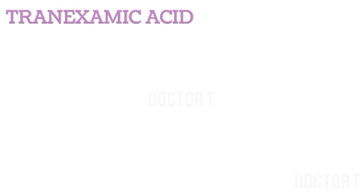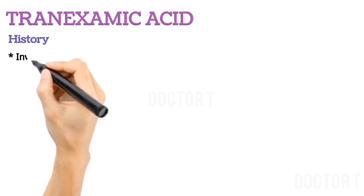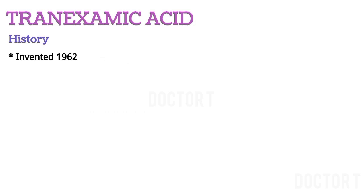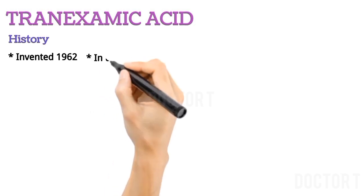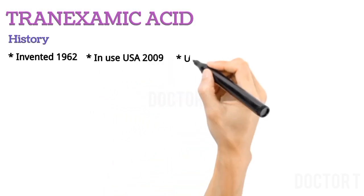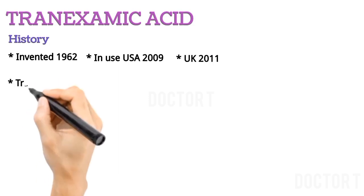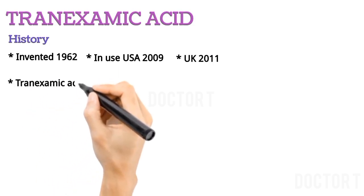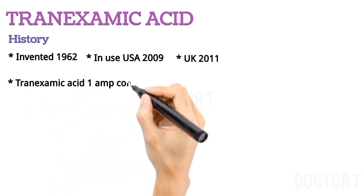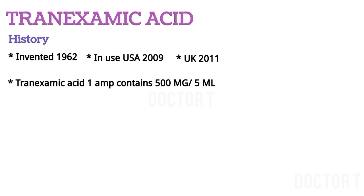Tranexamic Acid History: It was invented in 1962, came into use in the USA in 2009, and in the UK in 2011. One ampoule contains 500 mg per 5 ml.